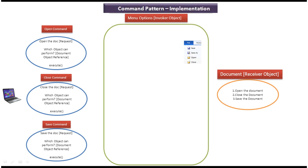Now we will see the scenario where we can use the command design pattern. As per command design pattern, the command object has three things. The first one is the request. The second one is the receiver object which can handle the request. The third one is the execute method. The execute method will call the receiver object method to handle the request.